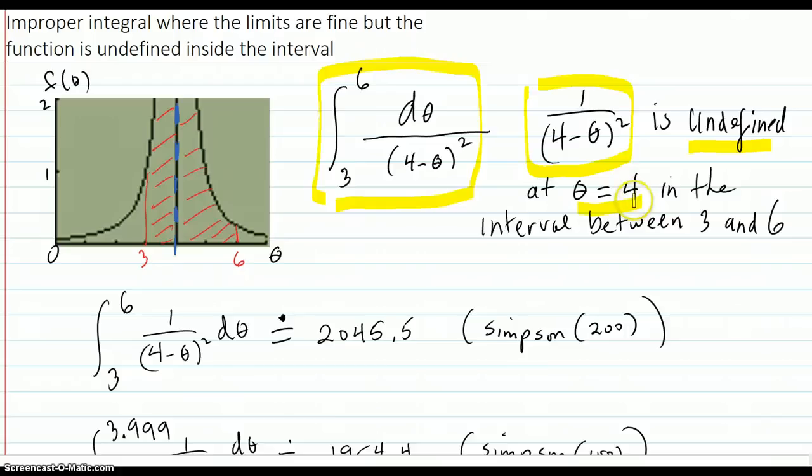except that at 4 the function is undefined. And that might cause trouble, it might not. Here's a graph over here, and we see that the area involved is here, up against this asymptote right here, and this area. So this function goes on up to infinity that way, and positive infinity that way.